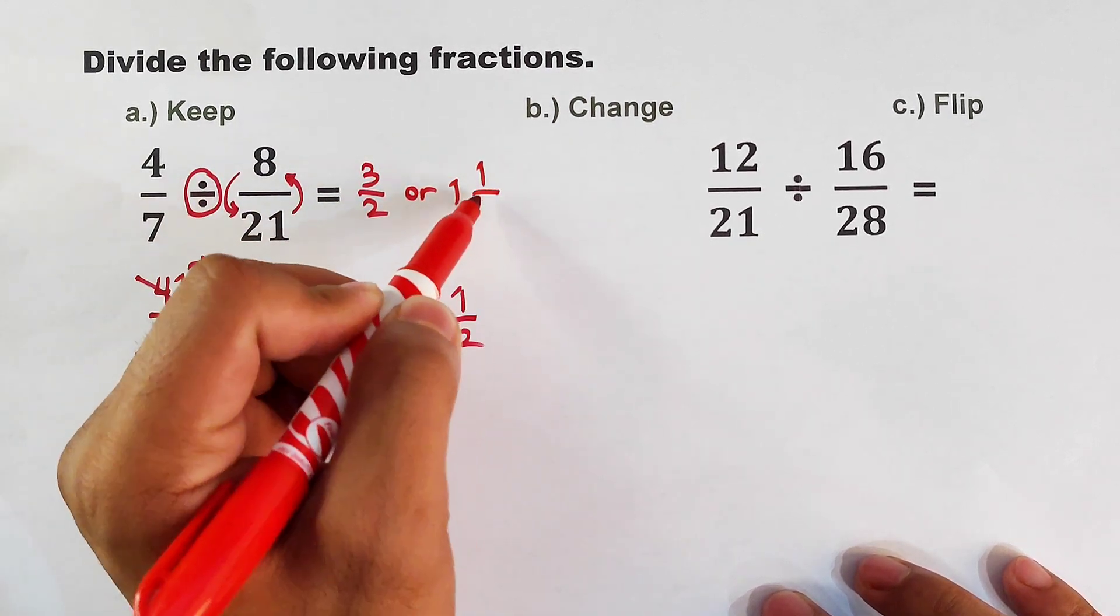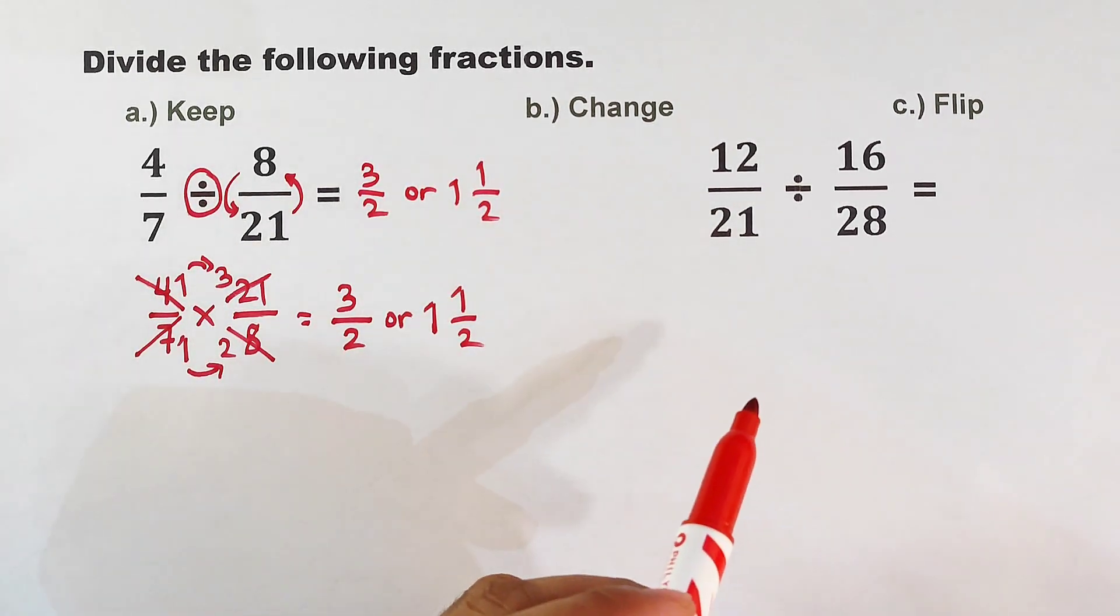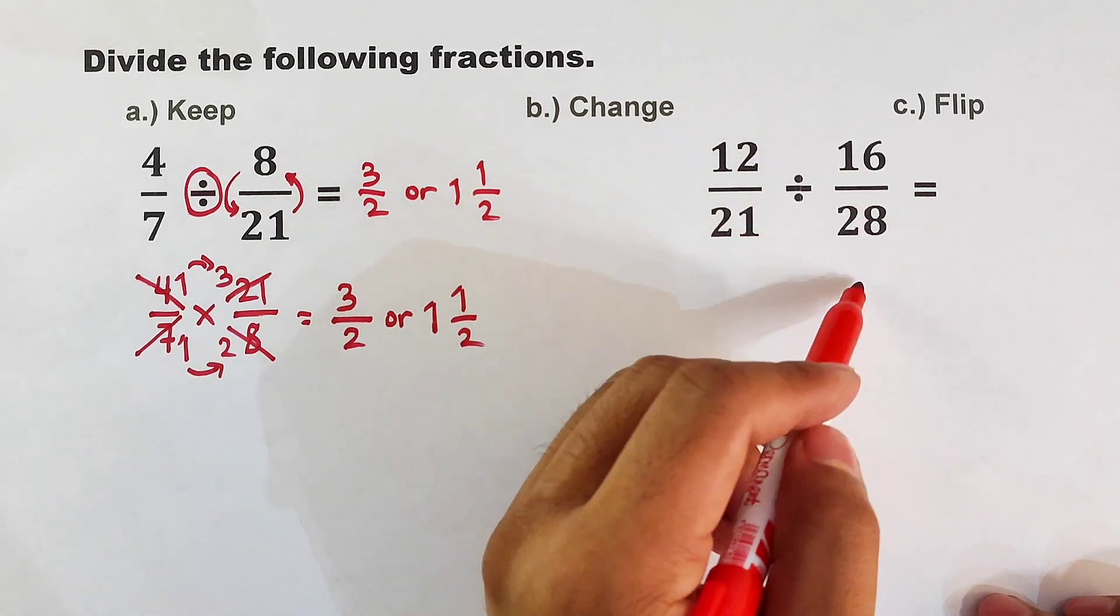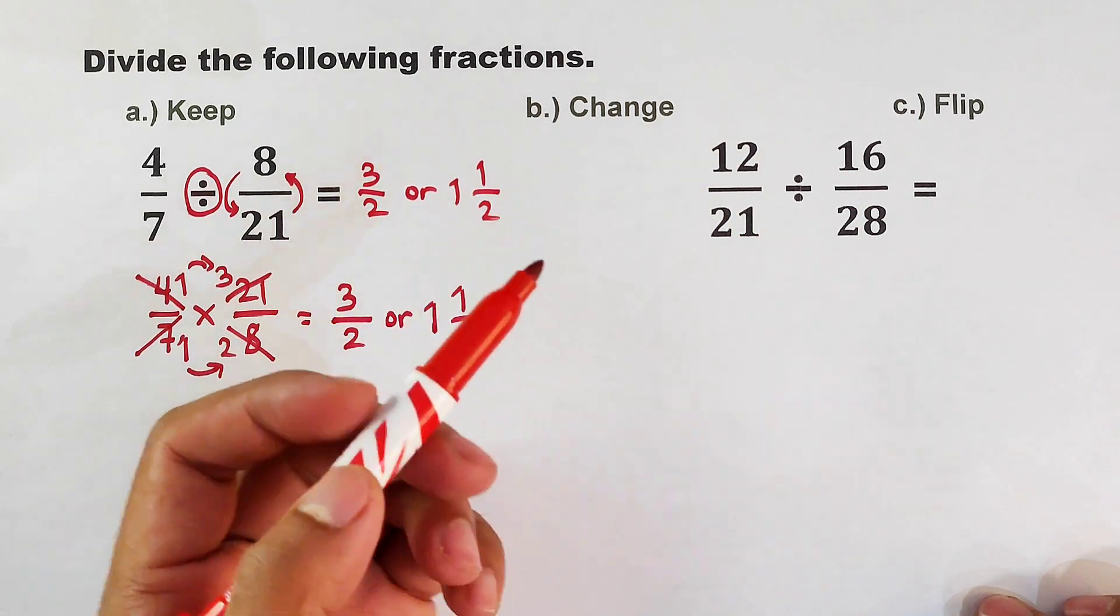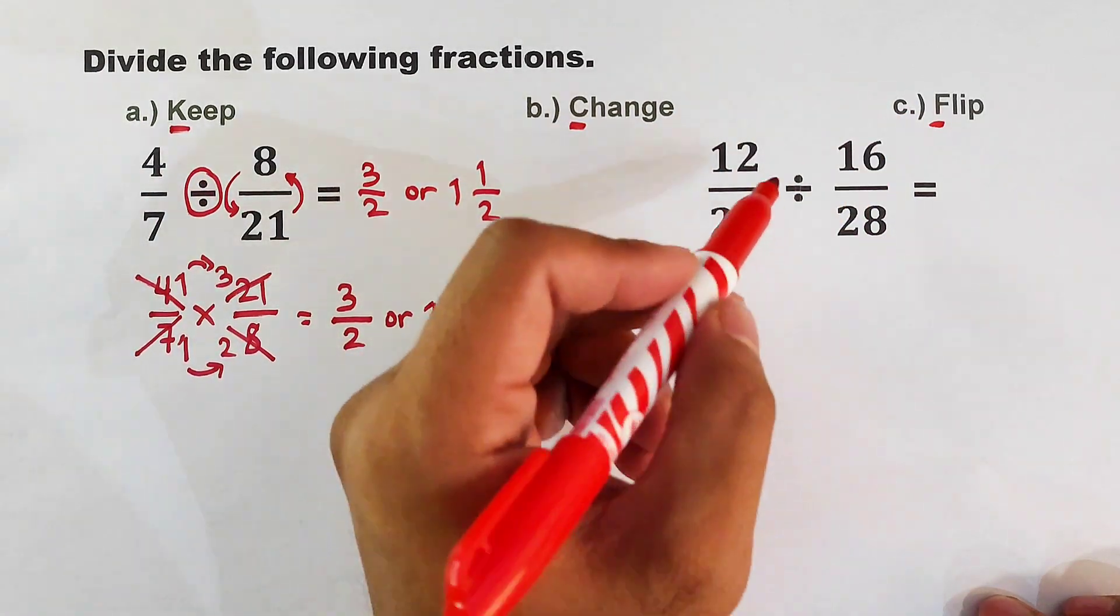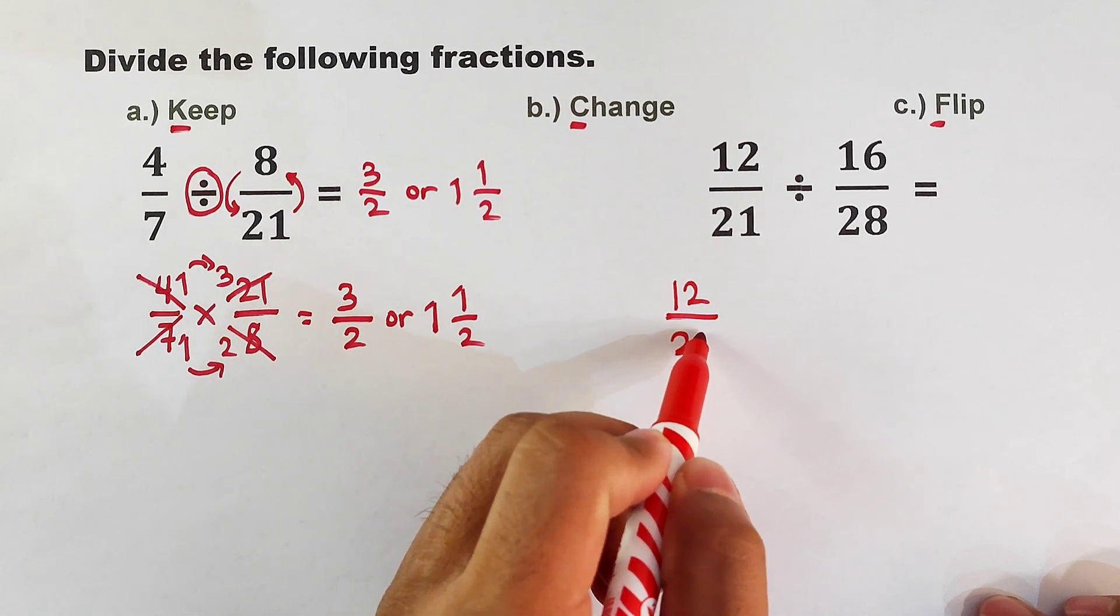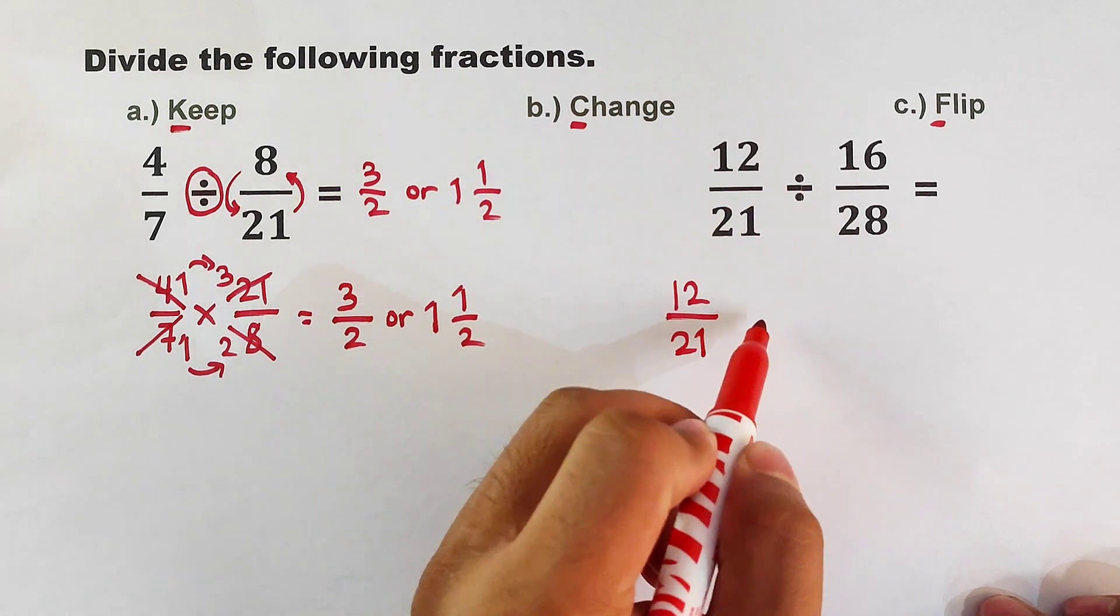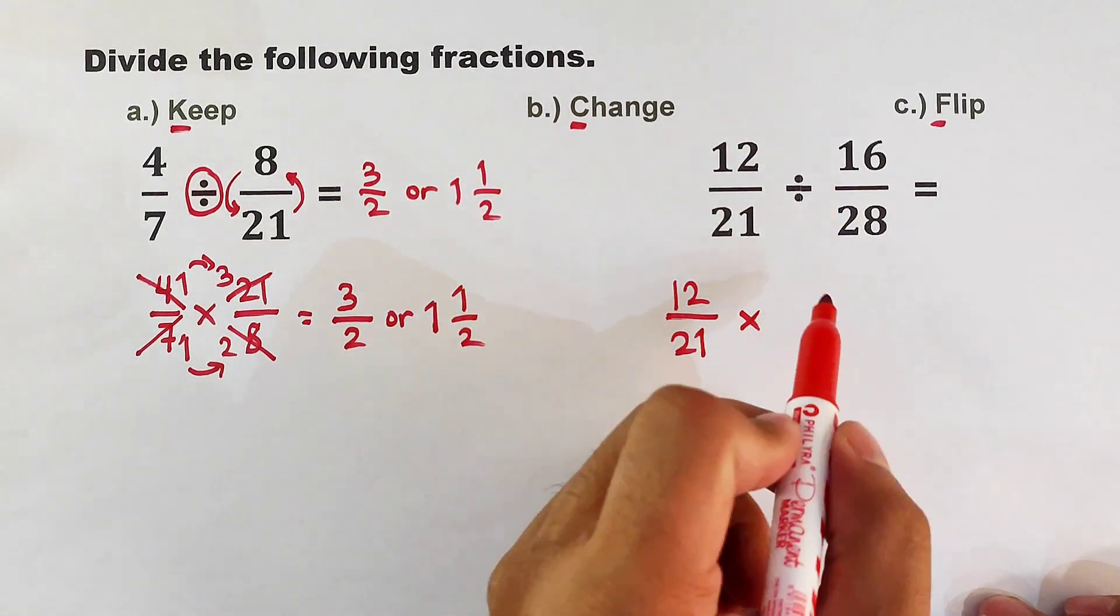Okay, now let's proceed with our next example. We have here 12 over 21 divided by 16 over 28. So still we have KCF: Keep, we have 12 over 21, and then change this operation to multiplication. This one must be flipped, it will become 28 over 16.